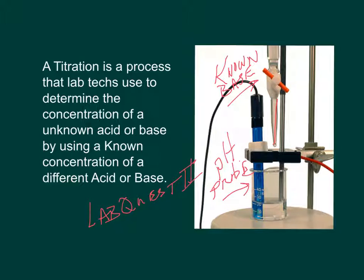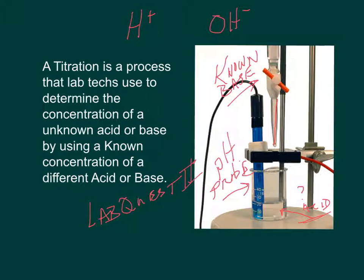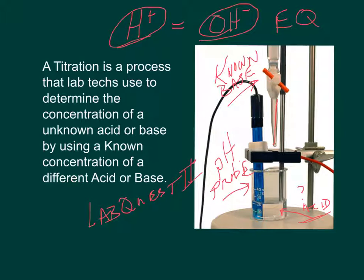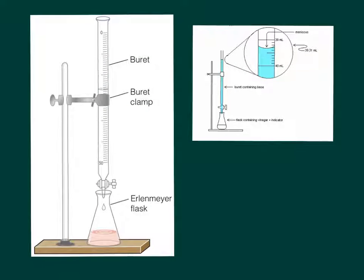So the known base is going to be in the burette for this first lab, and down here is going to be our unknown acid. Remember, an acid is something that has lots of extra hydrogen ions, and a base is something that has lots of extra hydroxide ions. When these two equal out, we are at what's called the equivalence point - the concentration of this equals the concentration of this.